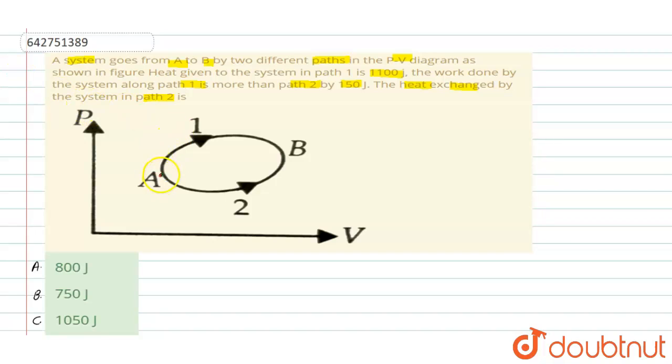The question is saying that the system goes from point A to point B. Now, heat exchanged along path 1, that is del Q1, is equal to 1100 joules. And work done by path 1, that is del W1, is equal to 150 joules more than path 2, means del W1 is equal to del W2 plus 150. Heat exchanged by the system in path 2, del Q2, we have to calculate.